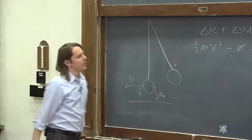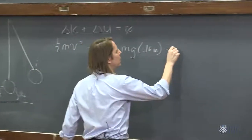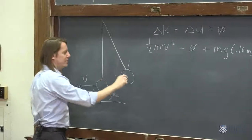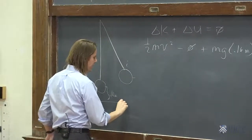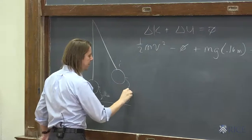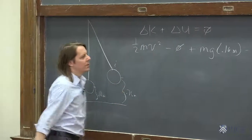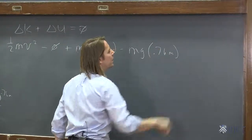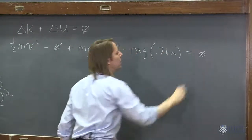That's u final minus u initial is mg. And what I'm going to do is I'm going to hold it up in the air and release it from a height of 0.76 meters. So minus mg 0.76 meters. All that should equal 0.